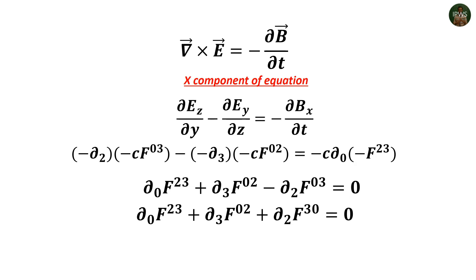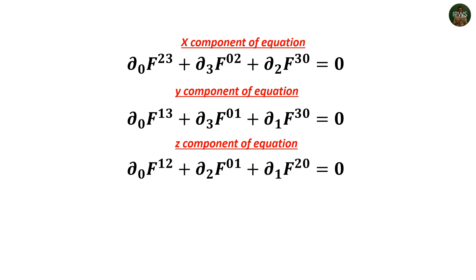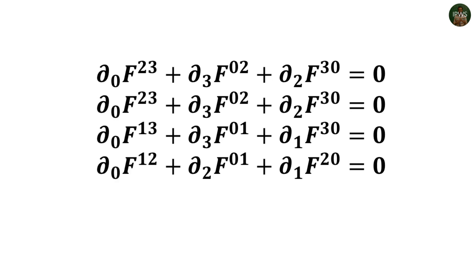The y-component yields similar results with indices 0, 1, 3, and z-component with indices 0, 1, 2. We combine all four equations using the four-dimensional Levi-Civita symbol epsilon_(alpha)^(beta)_(gamma delta), where upper and lower indices contract with del and field tensors. The factor of 1/2 handles terms appearing pairwise. The free index alpha generates the four component equations while the other indices generate terms within each equation, giving our second compact tensor Maxwell's equation.